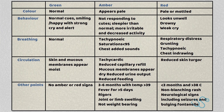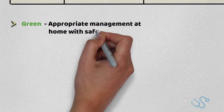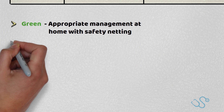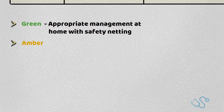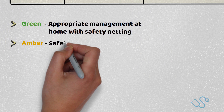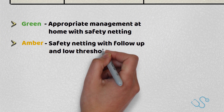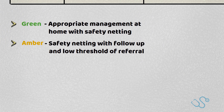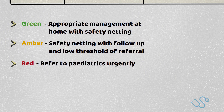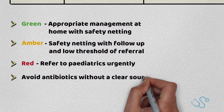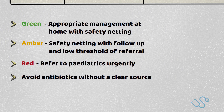In essence, a febrile child deemed green should be managed at home with clear safety netting. If the child is deemed amber, there may be a possibility to treat at home with clear follow-up and a low threshold for referral to secondary care. If a febrile child is deemed red, they should be managed by the acute paediatric team. NICE also advises to avoid antibiotics unless you have a clear source of infection.